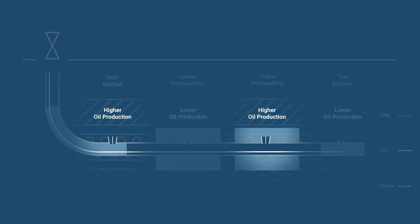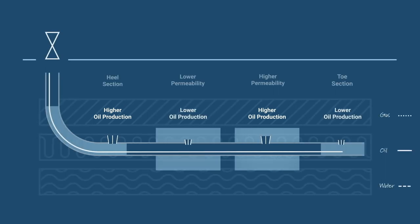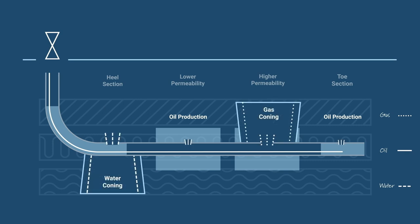That way, you drain the oil at a slower pace in the higher flow rate zones, which in turn means that you delay water and gas coning in these areas. As a result, you also delay water and gas breakthrough in the wellbore.